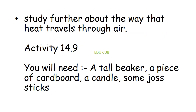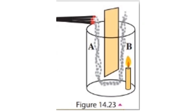Here you have to do an activity to study how heat travels through air. You will need a tall beaker, a piece of cardboard, a candle, and some joysticks. First, cut the piece of cardboard to the shape as shown in the figure and place it at the middle of the beaker to divide the inside into two chambers. Then place the lighted candle inside chamber B of the beaker as shown in the figure. Light some joysticks and hold them at the mouth of the beaker on the other side of the cardboard.